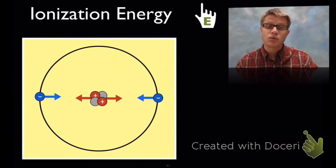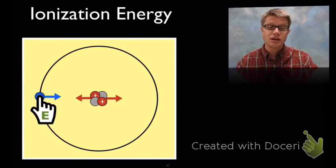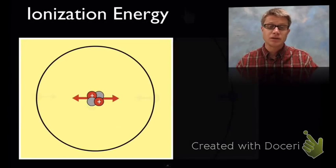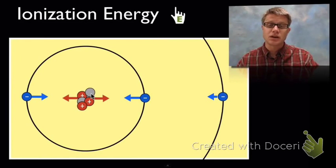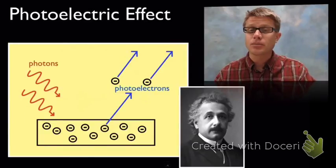Why is this important in chemistry? We can use it to measure ionization energy — the amount of energy required to remove an electron, like a little hand that has to come in and pull it off. The ionization energy depends on Coulomb's Law because the proton wants to hold the electron in place. For something larger like lithium, the outer electron is further out, so since that radius is larger, you're going to require a smaller amount of ionization energy to pull it off.